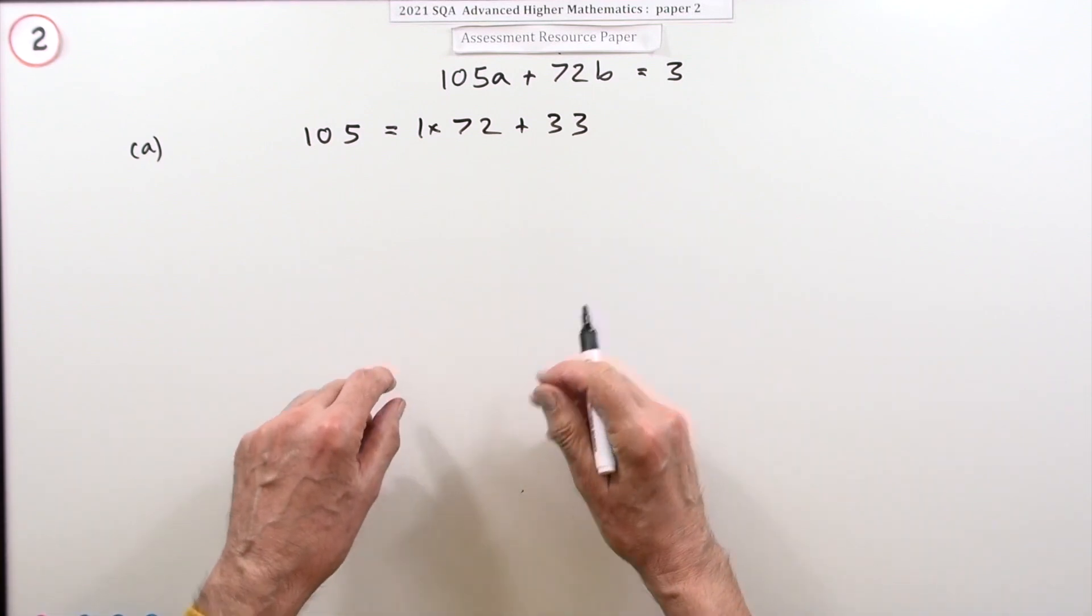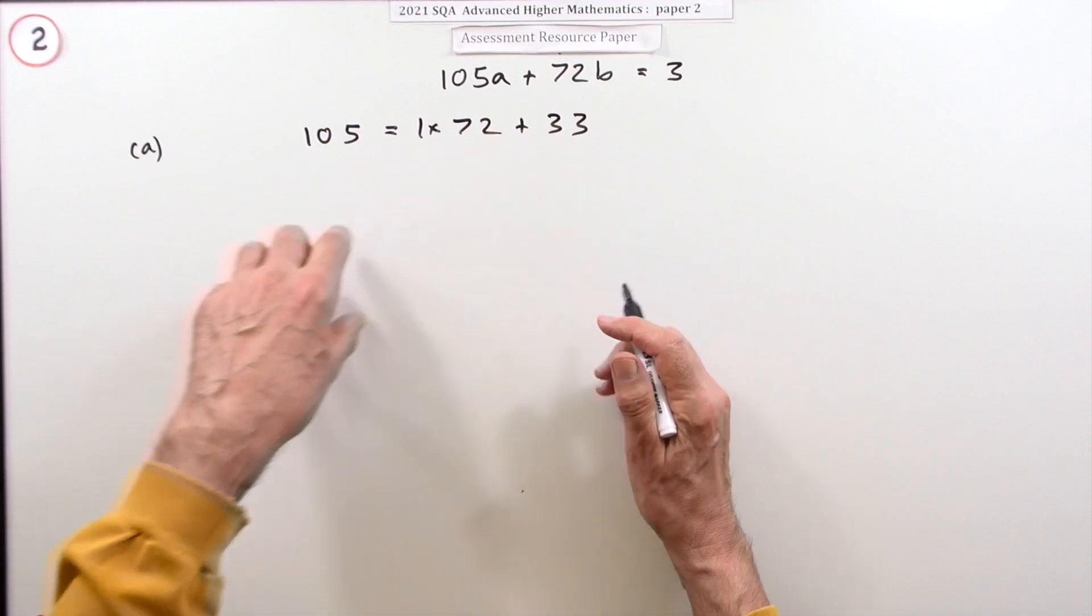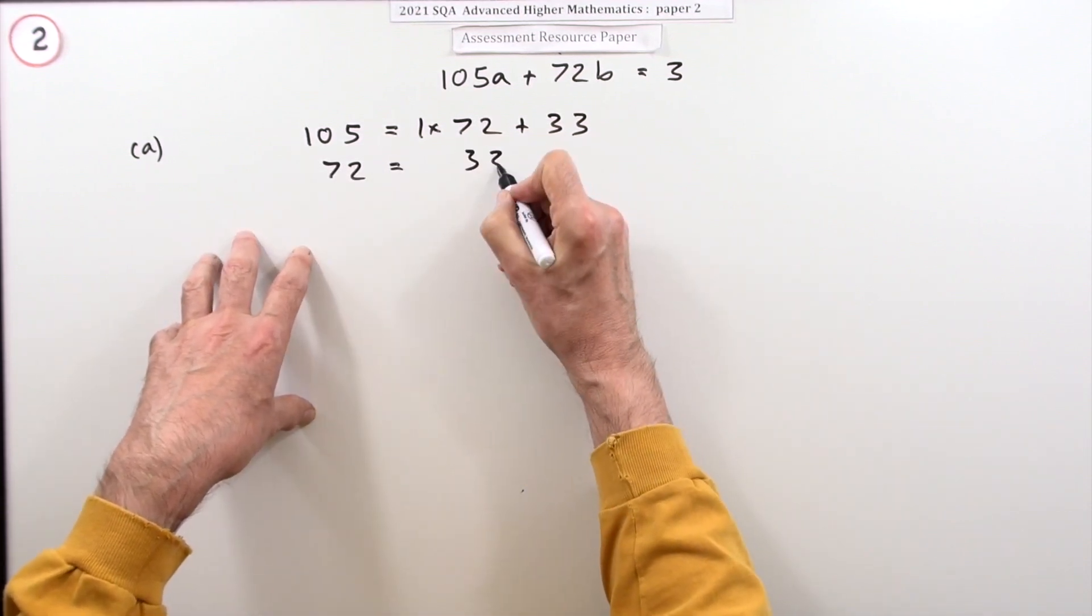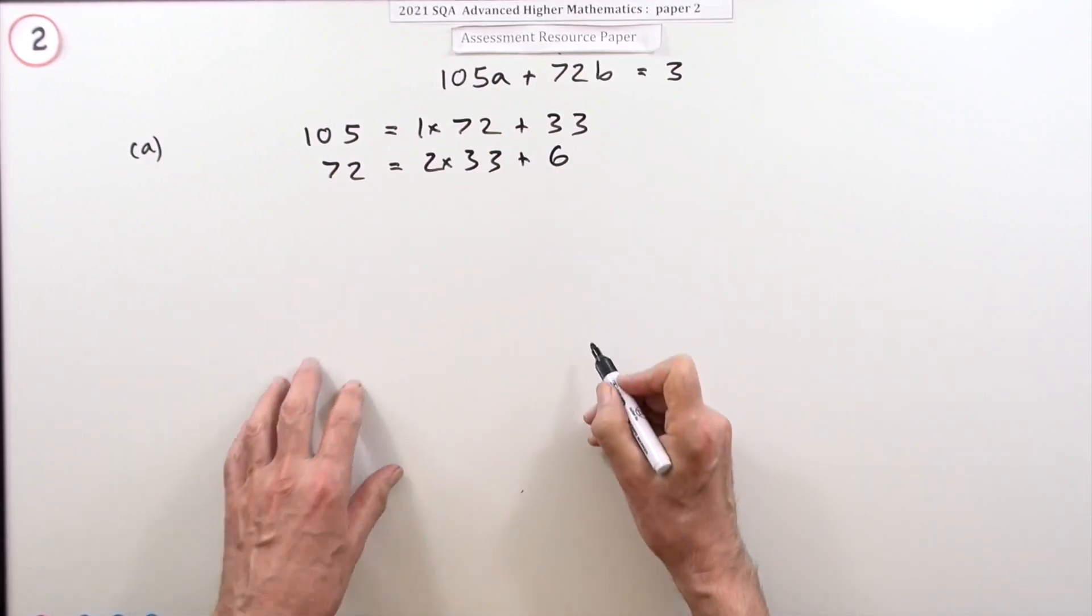Now does 33 go into them all? Let's try 72. Does 33 go into it? No, two of them make 66, so there'll be six left over.